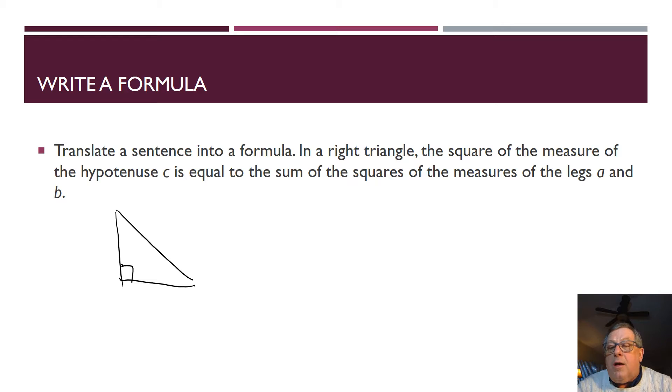The first thing, anytime we're looking at right triangles, we want to identify the hypotenuse, which is directly across from the right angle. So we're going to label that as C, and then we've got two legs. Let's say this leg is A, and this leg is B.